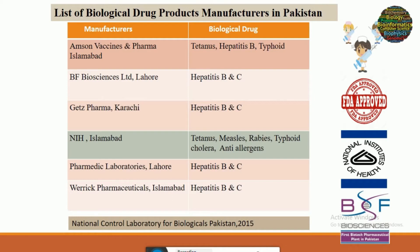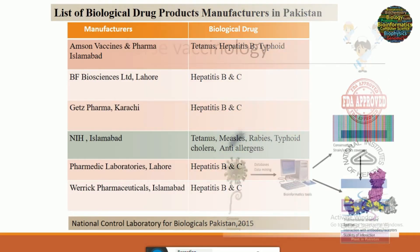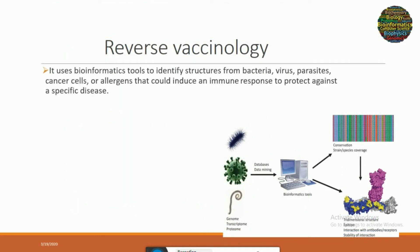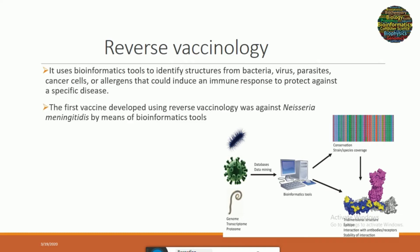Our main focus will be on reverse vaccinology. It uses different bioinformatics tools to identify structures from bacteria, viruses, parasites, cancer cells, or allergens that could induce an immune response to protect against a specific disease. In reverse vaccinology, we identify a protein sequence from a pathogen, evaluate it using different parameters to select the portion which is antigenic — that is, the portion which can produce an immune response — and then that portion is used to design a vaccine. The first vaccine developed using this approach was against Neisseria meningitidis.